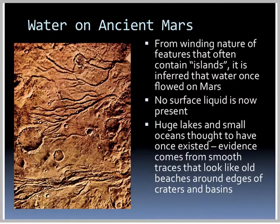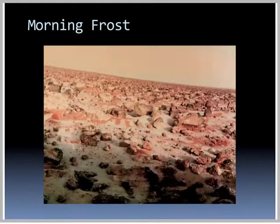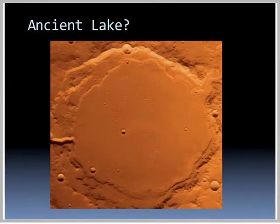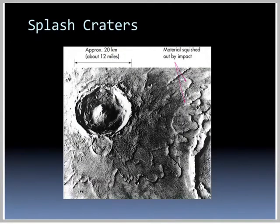From winding terrain features that often contain islands, it is inferred that water once flowed on Mars — there is no surface liquid present currently. Evidence for huge lakes and small oceans includes smooth traces that look like old beaches around the edges of craters and basins. Morning frost visible in pictures is actually dry ice — frozen atmosphere. Other images show an ancient lake that dried up over large periods of time, and splash craters where material is squished outward like someone stomped in mud, suggesting water was present when the impact occurred.